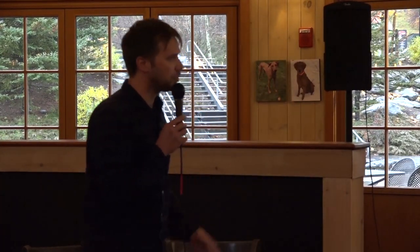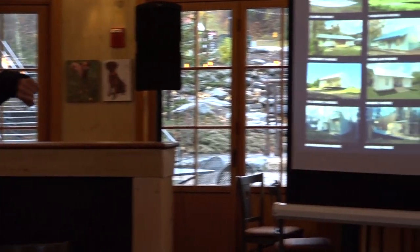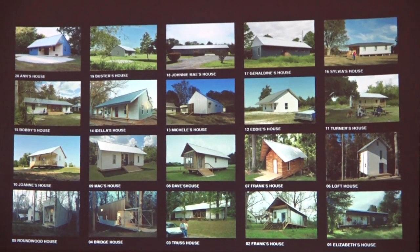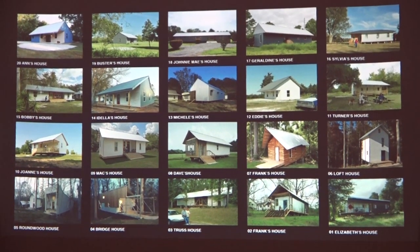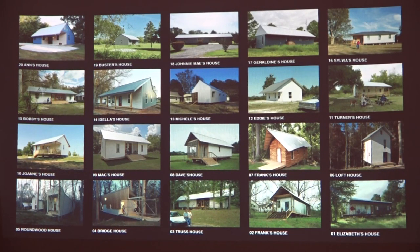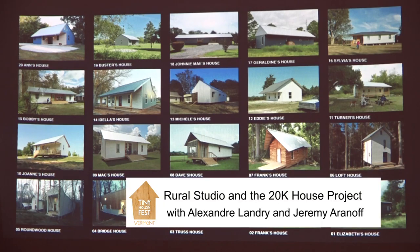The $20K figure came from the maximum USDA rural loan amount available to build a house. This process started in 2005, and by 2019 over 20 houses had been developed and built. As you can see, there are similarities among these prototypes — every prototype builds on the one before it. Today we'll talk in more detail about two specific prototypes.